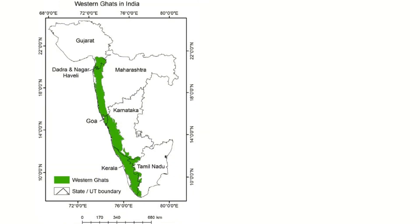On the other hand, the western coastal plains go from Kerala in the south to Gujarat in the north, passing through Karnataka, Goa, and Maharashtra along the way.